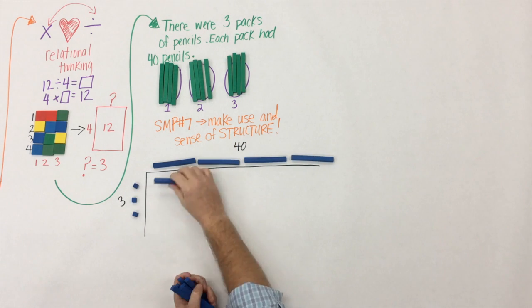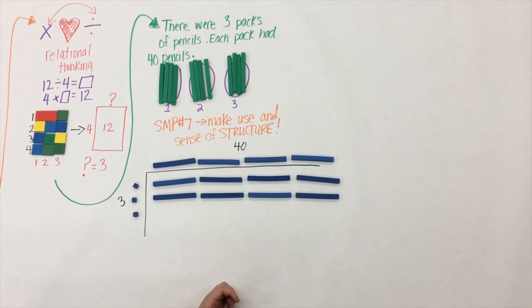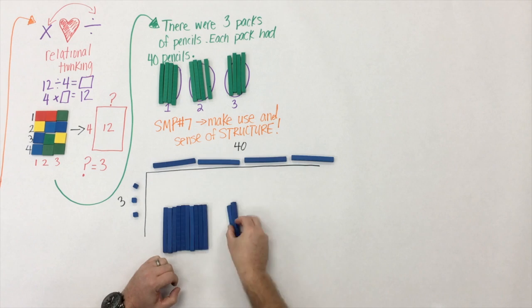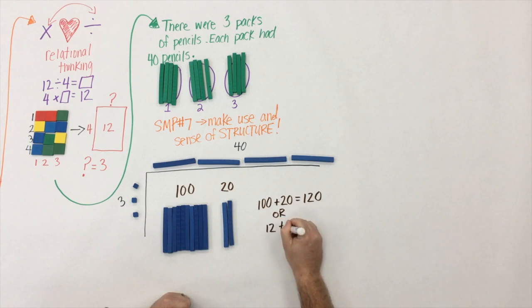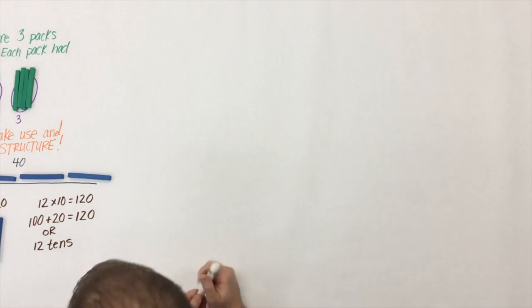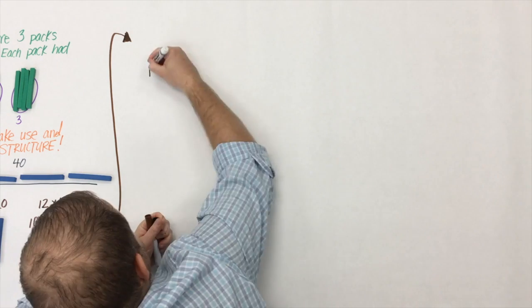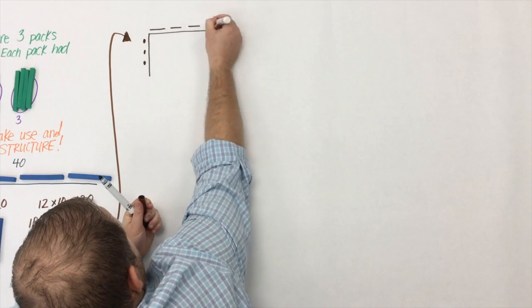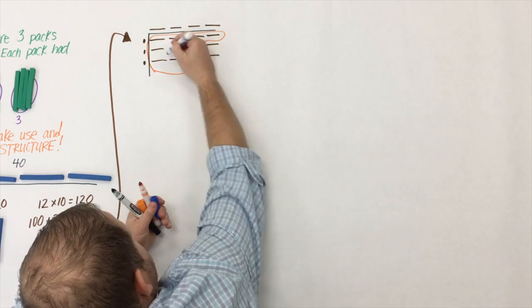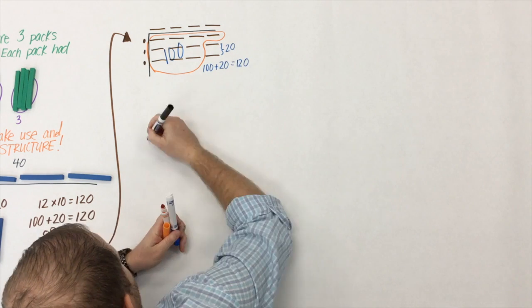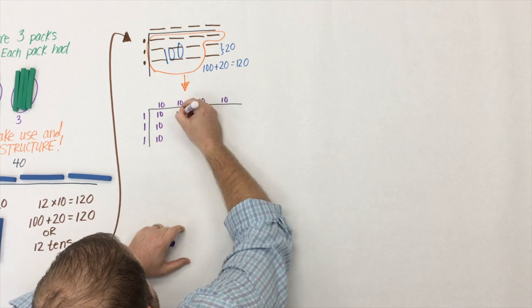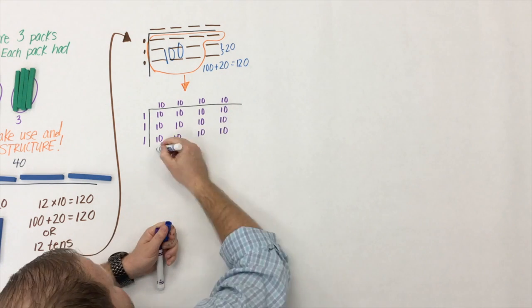Here we begin to create an area model for multiplication, very much like an array but on a bigger scale with larger numbers. So three times 40 — we build it out of ten-rods. We have ten tens, which is a hundred, plus twenty is a hundred and twenty, or it could also be seen as twelve tens — a really big understanding for students. Once students have established this, they draw pictorial models for their concrete work, and then use numbers to represent their picture.